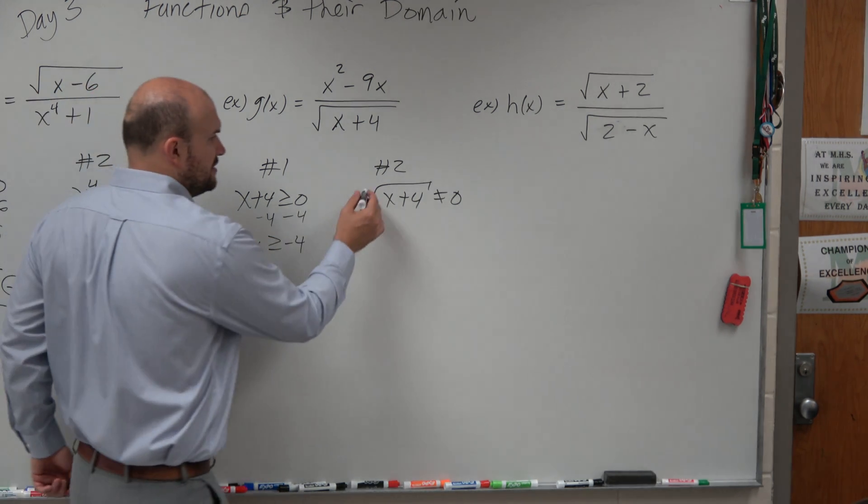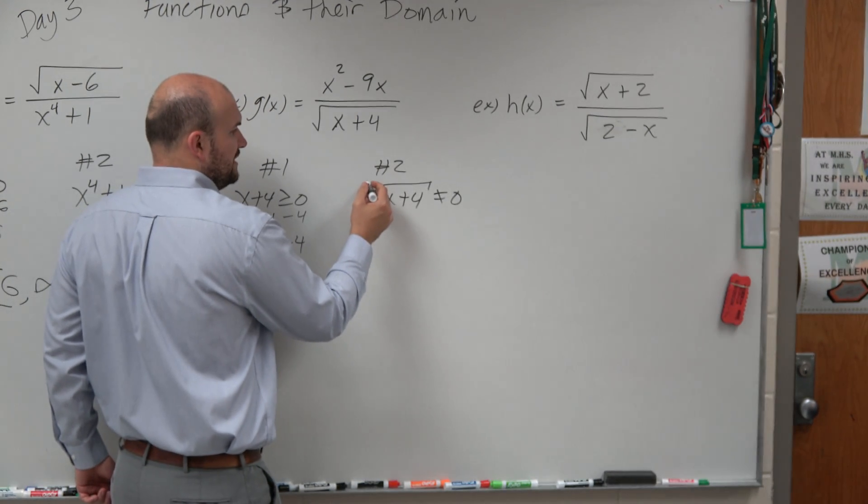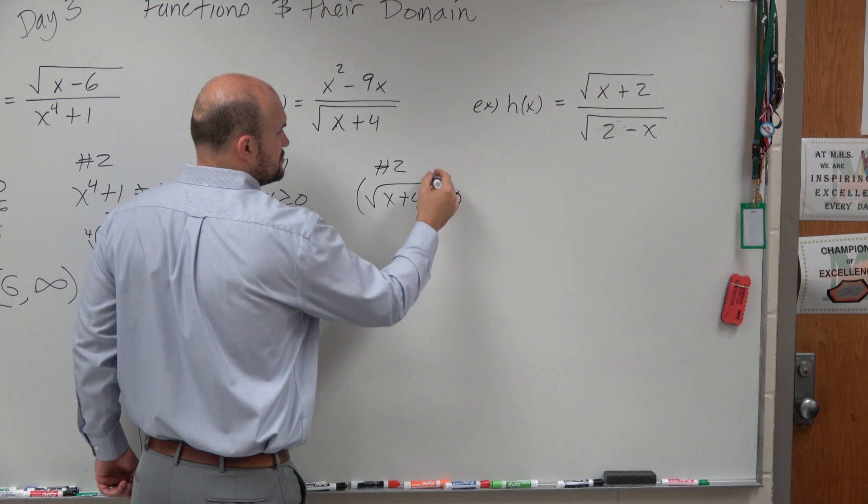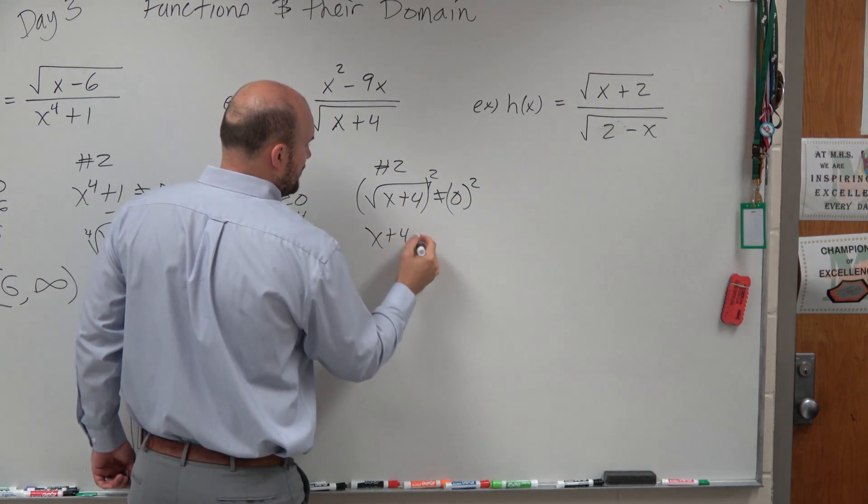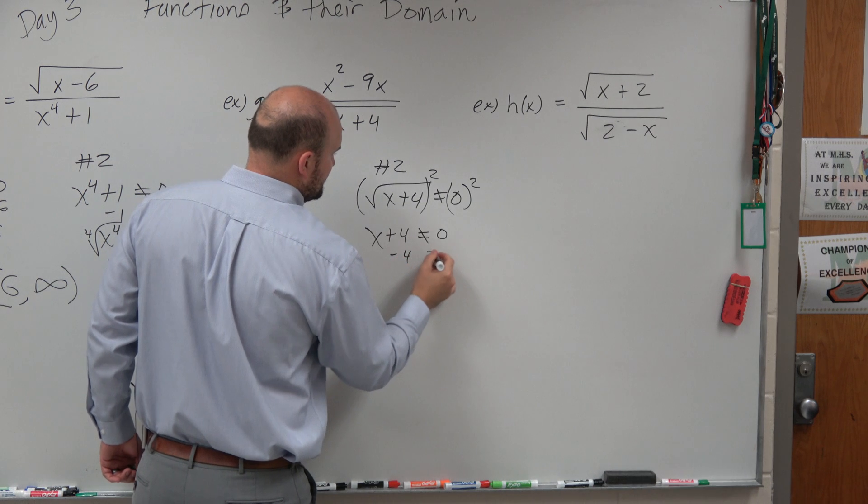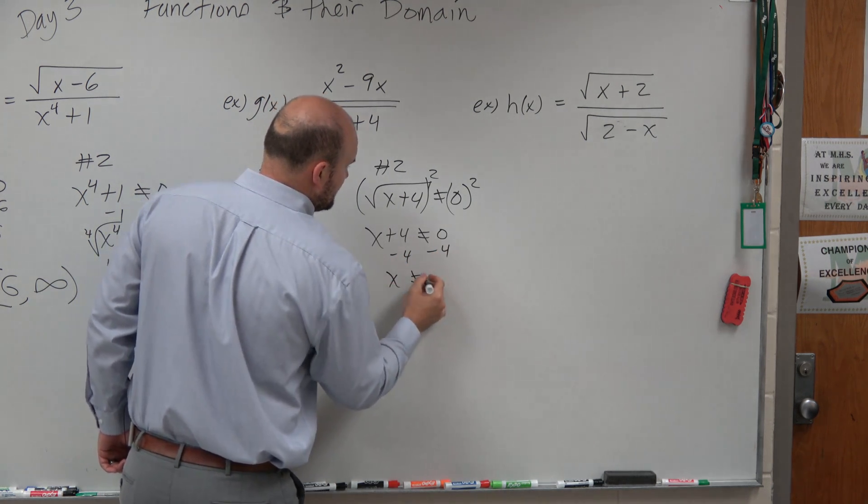And then over here, you have to undo the square root, which would be square it. So you square both sides. x plus 4 cannot equal 0, minus 4, minus 4, x cannot equal negative 4.